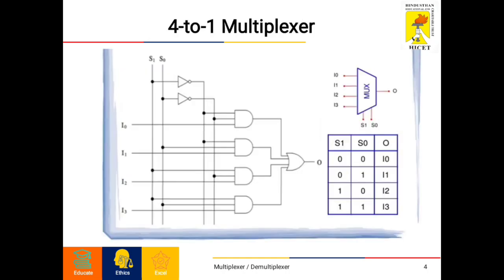Now let's see the 4-to-1 multiplexer. A 4-to-1 multiplexer is a combinational circuit with a maximum of 2 power 2 inputs, where 2 is the number of select lines. One of these data inputs will be connected to the output via the select lines. Since there are N selection lines, there will be 2 power N combinations of 1s and 0s. The inputs are I0, I1, I2, and I3, the output is O, and the selection lines are S1 and S0.